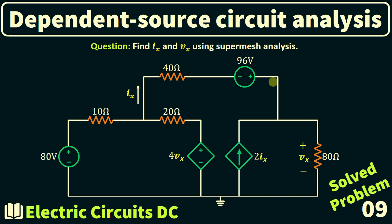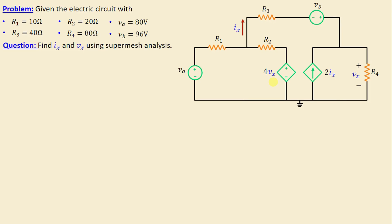Greetings, welcome to this new video about dependent source circuit analysis — problem number nine. Let's consider this network consisting of four resistors labeled R1 through R4, along with two independent voltage sources VA and VB. Additionally, we can observe the presence of dependent sources, especially a voltage-controlled voltage source and a current-controlled current source.